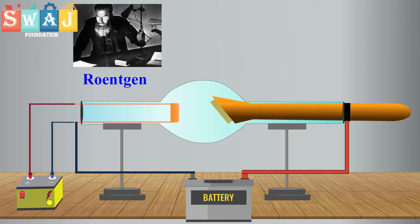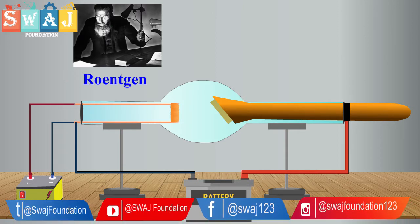A German scientist, Roentgen, accidentally discovered X-rays in 1895.